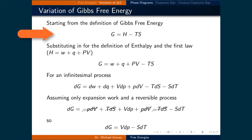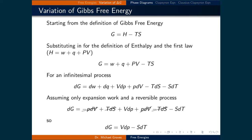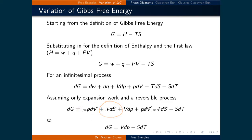Starting from the definition of Gibbs free energy, G = H - TS, we substitute in the definition of enthalpy and the first law. H equals W plus Q plus PV, so G equals W plus Q plus PV minus TS. For an infinitesimal process, dG equals dW plus dQ plus VdP plus PdV minus TdS minus SdT, applying the product rule for the PV and TS terms. Assuming only expansion work and a reversible process means dW equals -PdV and dQ equals TdS, so terms cancel and we get dG = VdP - SdT.